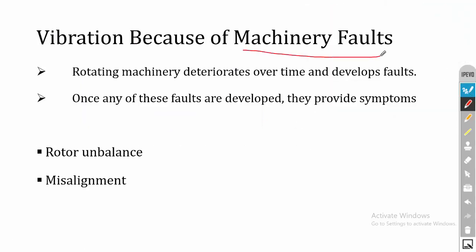The second source of vibration is machinery fault. When machinery continues to rotate for a long time, it is subjected to wear and tear and starts to vibrate. Sometimes the machinery may fail. Once any fault develops, it will provide symptoms. We have to measure vibration signals continuously, and if we find any symptoms of failure, we have to go for repair or monitoring work. The two most common machinery faults in a rotor bearing system are rotor unbalance and misalignment.